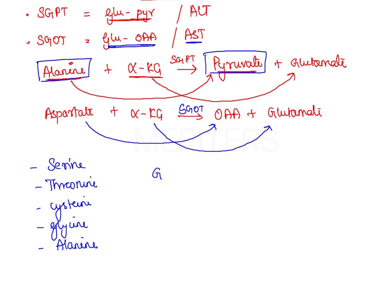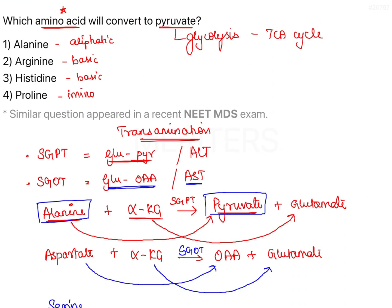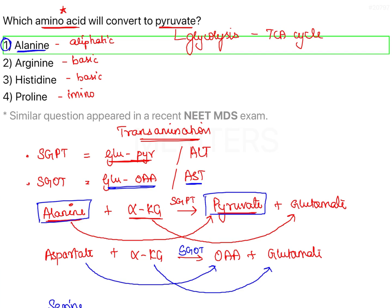We can remember these with the mnemonic GST-CA: G for glycine, S for serine, T for threonine, C for cysteine, and A for alanine. These are the amino acids that get converted into pyruvate. Therefore, from the four options, the amino acid that gets converted into pyruvate is option one — alanine.